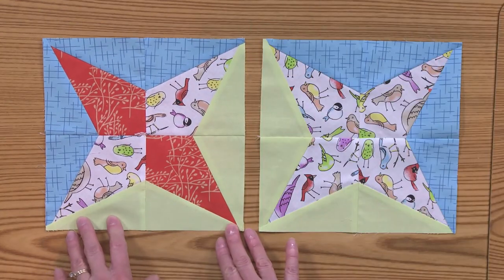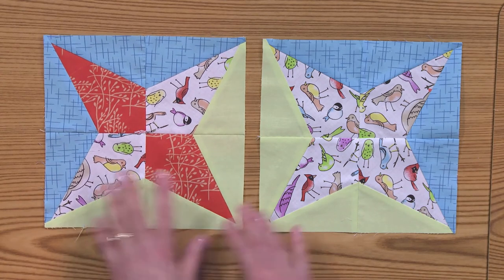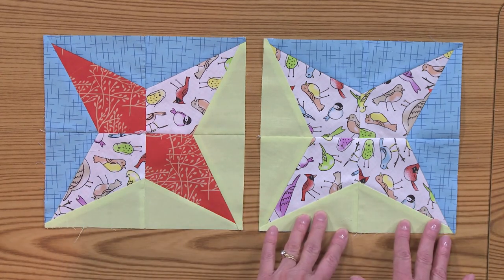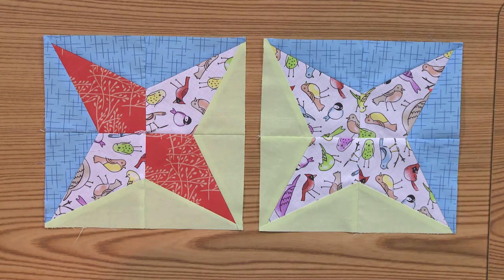The units are then sewn into blocks. You'll make 20 Block Y and 16 Block Z. The blocks are then sewn together to make the quilt top.